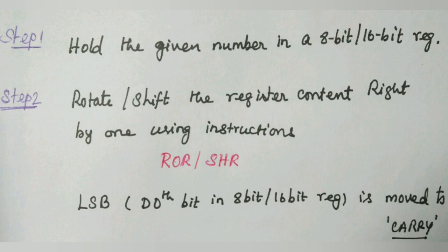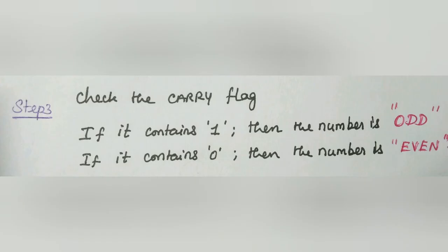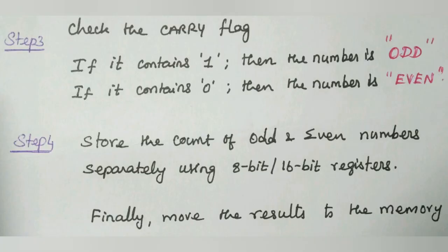First step: take the value in the register then rotate right side one bit. One bit is transferred to carry flag. If the carry contains bit 1, then the given number is odd. If the carry contains 0, then given number is even. If the given number is odd, we increment BX register. If the given number is even, we increment the DX register.